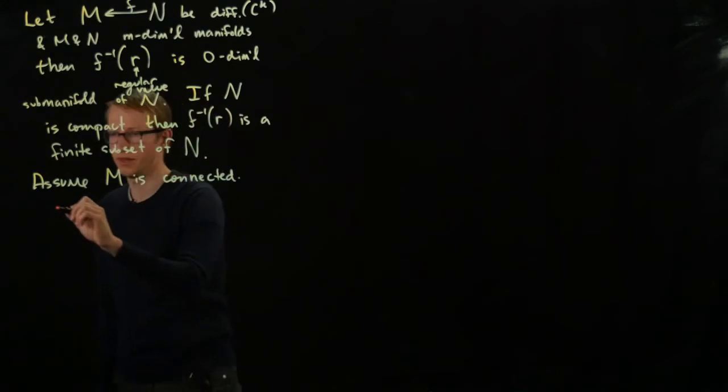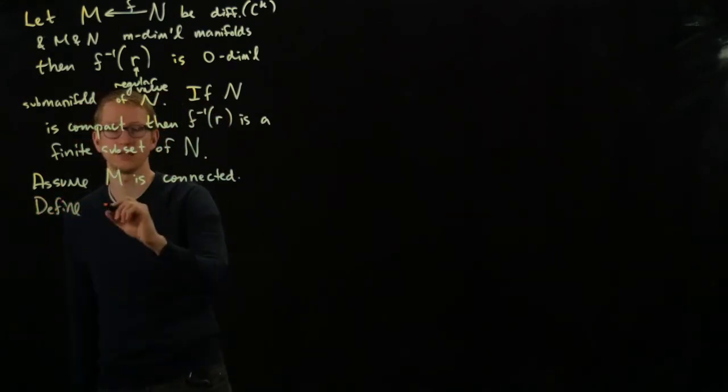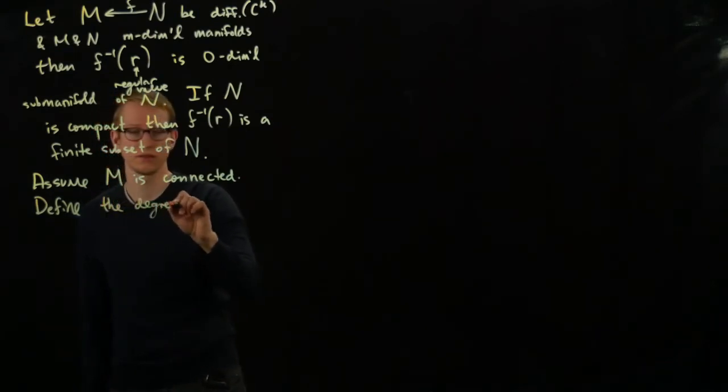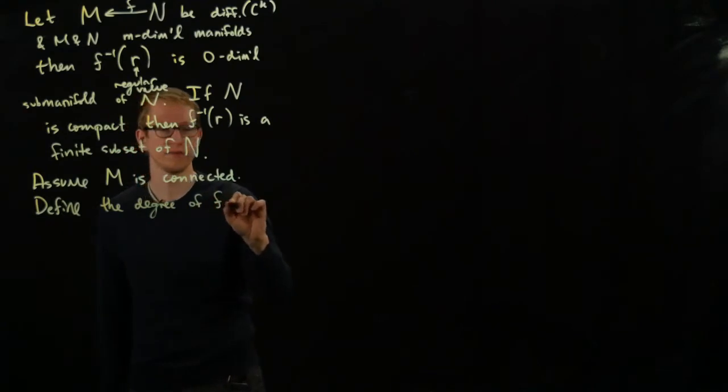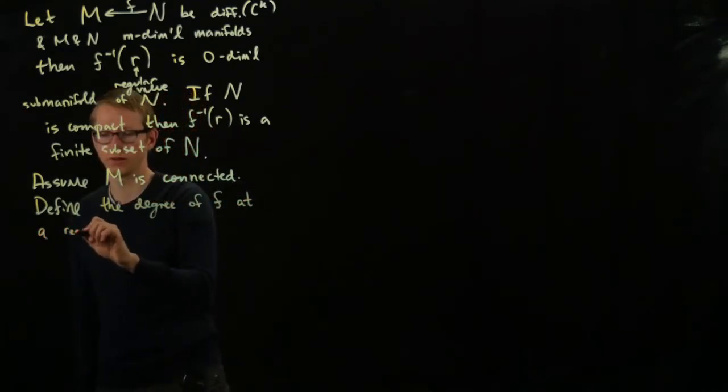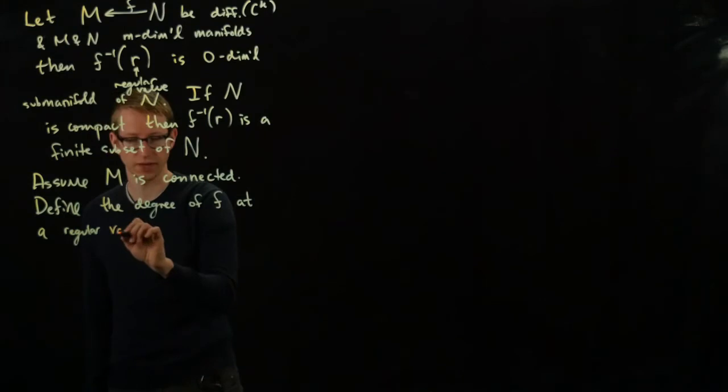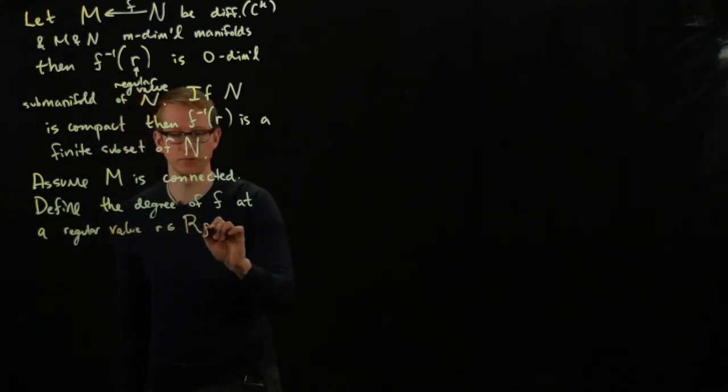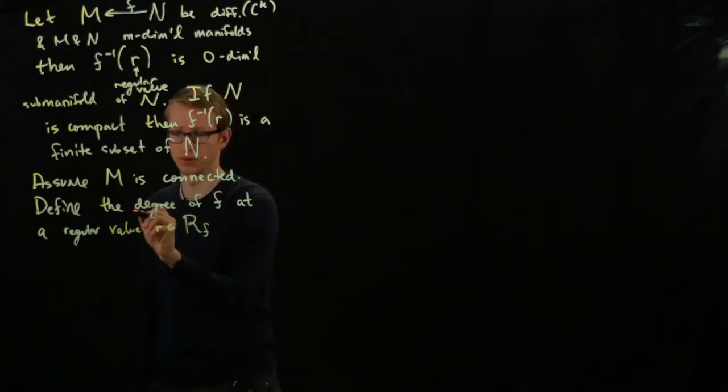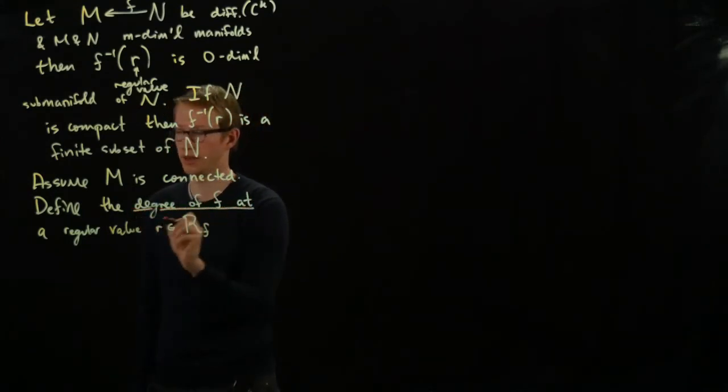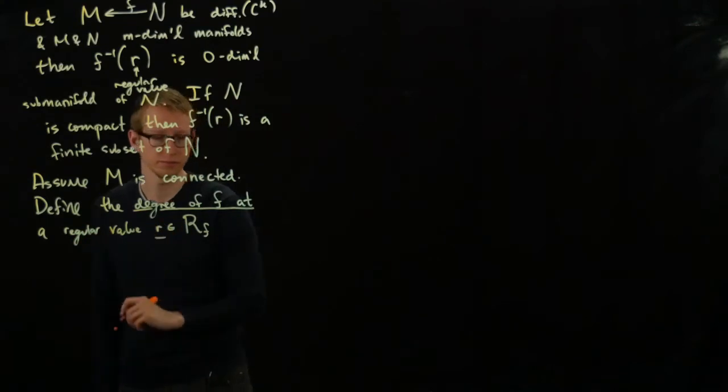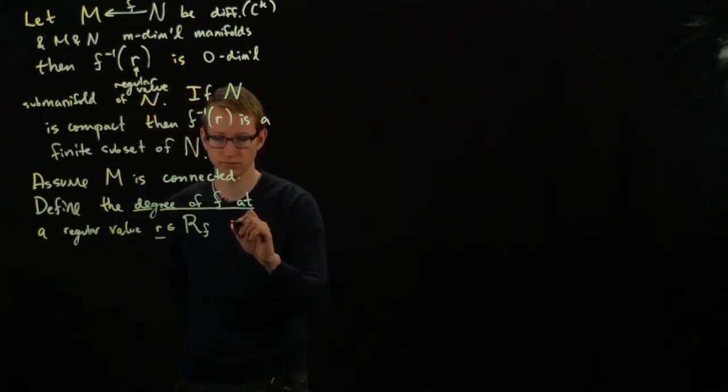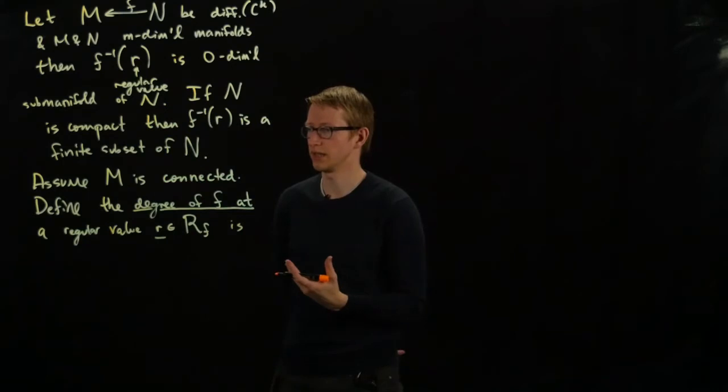So if we assume M is connected as well, then we can define, for any such map F, the degree of F at a regular value R, remember we denoted this set by R_F, so this is the degree of F at R. So let's just look at this for a second.